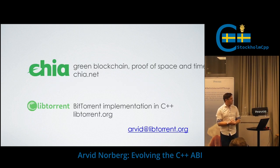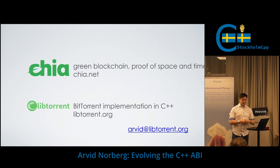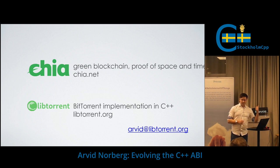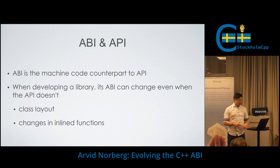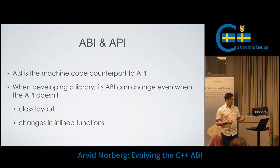A little bit about myself: I am primarily involved in two projects. My day job is at Chia, which is a brand new sustainable blockchain. And also LibTorrent, which is a BitTorrent implementation — my nights and weekends project. So, ABI and API — what's that all about?